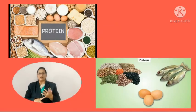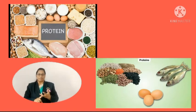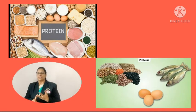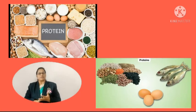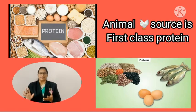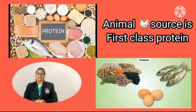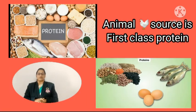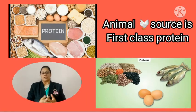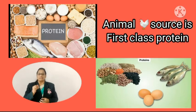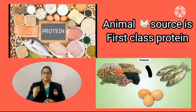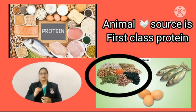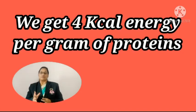Milk, eggs, and all non-veg food are very rich in proteins. Protein obtained from animal sources is called first class protein, so non-vegetarians get first class protein from non-veg food. Vegetarians can also get rich proteins by eating all types of pulses, milk, etc. Protein intake is very necessary for growth. We get 4 kilocalories of energy per gram of protein.